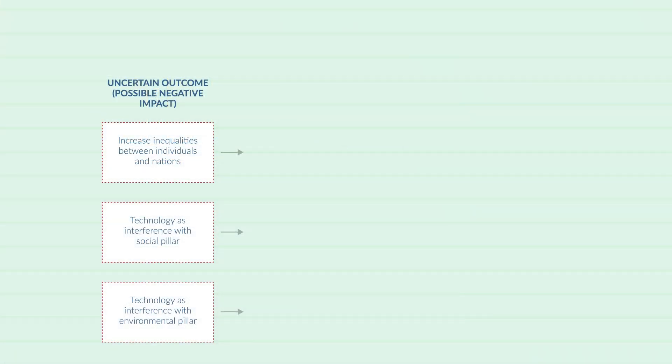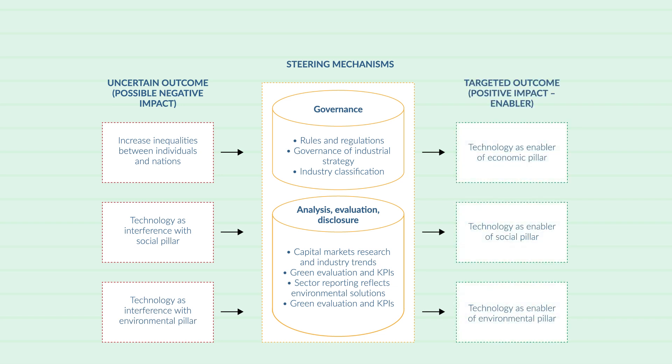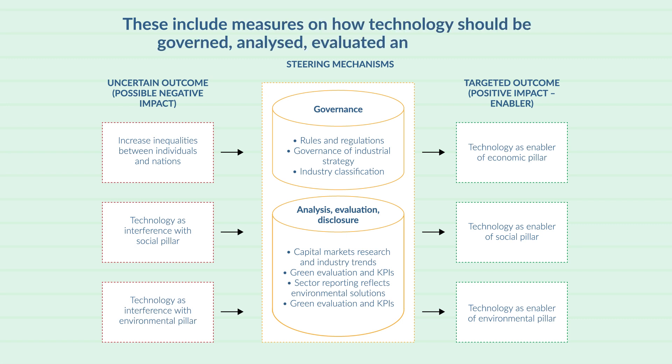By analyzing the empirical material, Olga also highlighted mechanisms that could encourage the positive use of technology for enabling sustainable development. These include measures on how technology should be governed, analyzed, evaluated and disclosed.